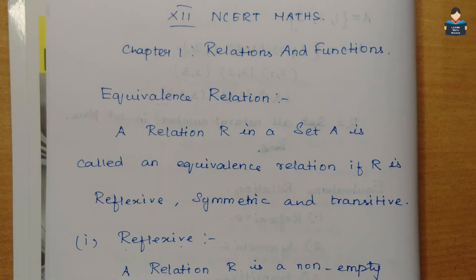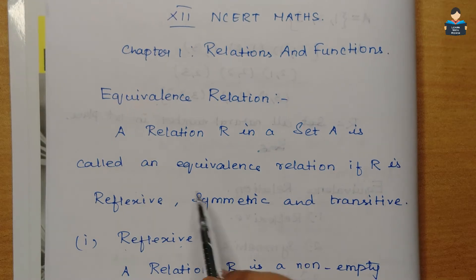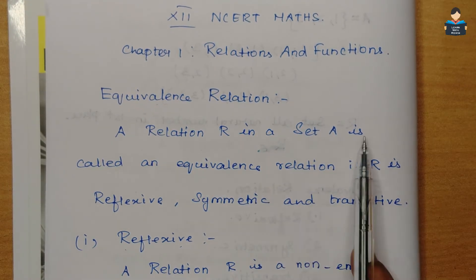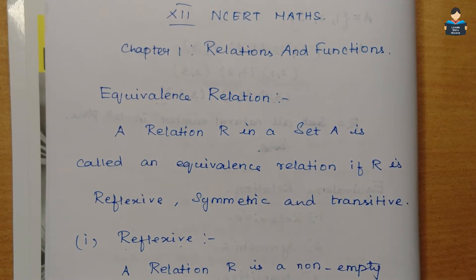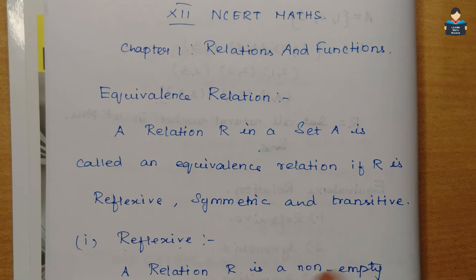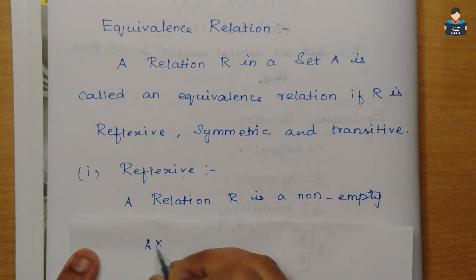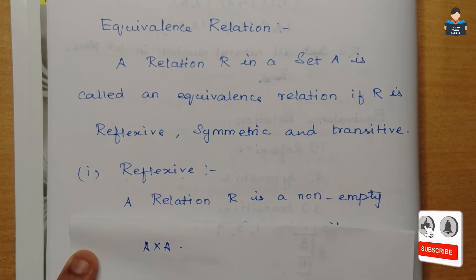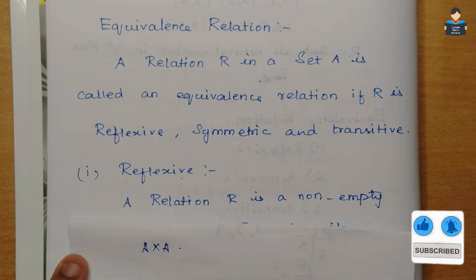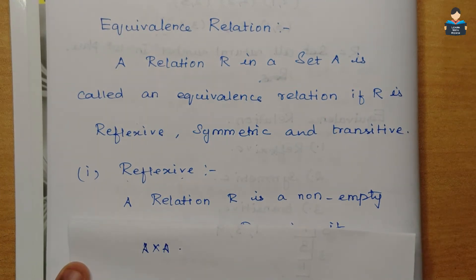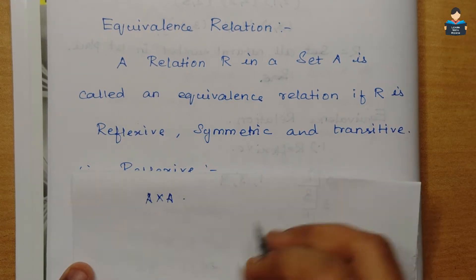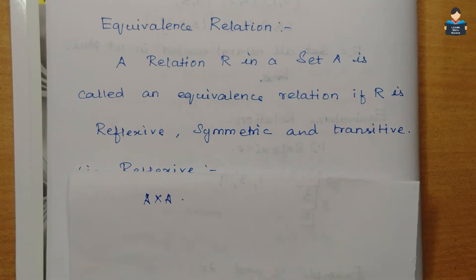Hello everyone, welcome to our channel. In this video on 12th standard NCERT Maths Chapter 1, Relations and Functions, we will see equivalence relations. A relation in a set A is called an equivalence relation if it satisfies three conditions: reflexive, symmetric, and transitive.